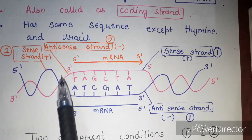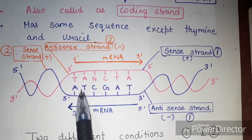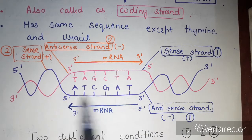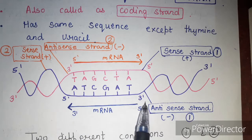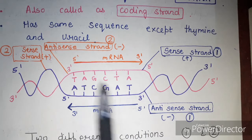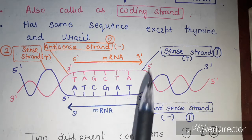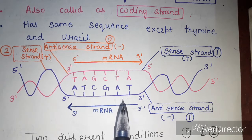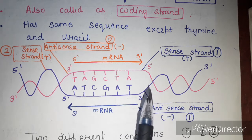DNA is double-stranded. There are two ends: one strand runs 3-prime to 5-prime, and the other strand runs 5-prime to 3-prime. This is the antiparallel nature of DNA. So, the designation of sense and antisense strand depends on the orientation of the promoter.